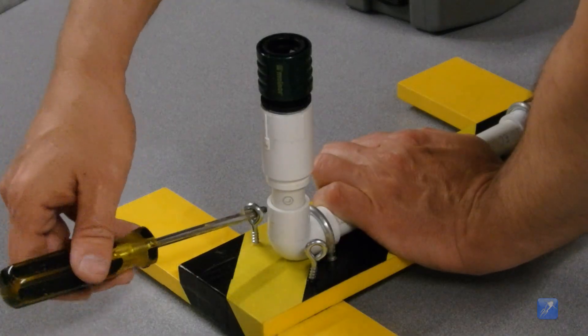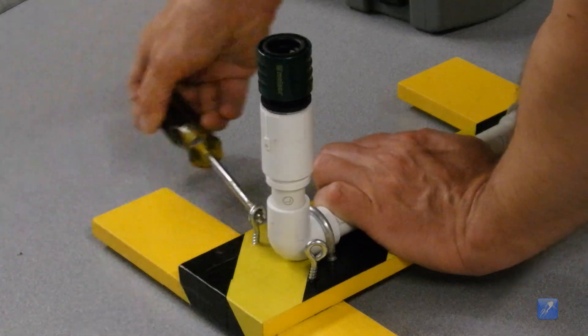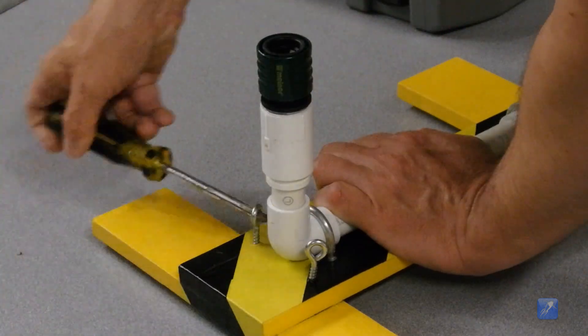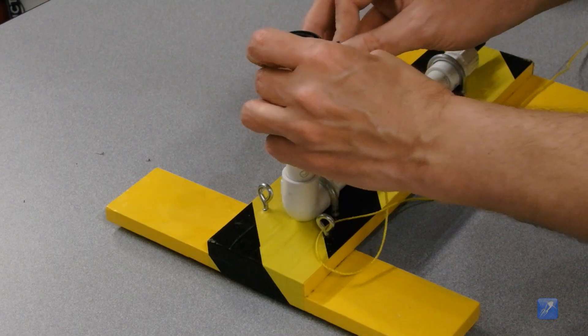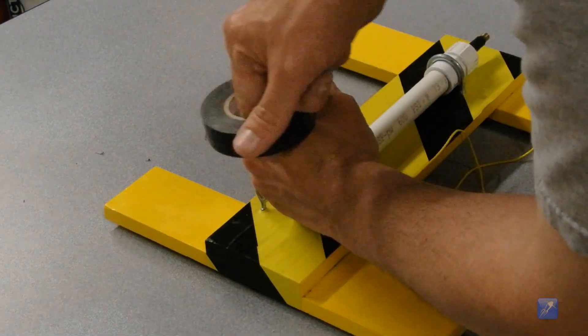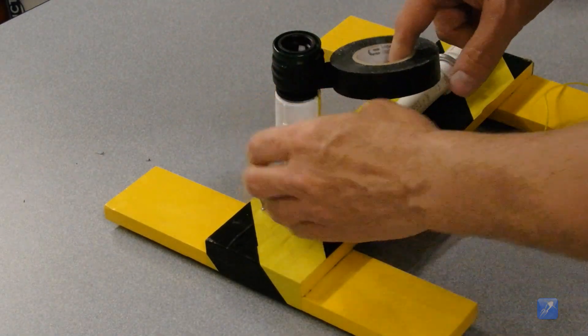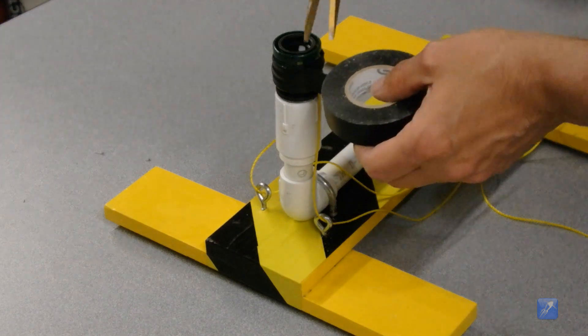Now you place a screw eye on either side of the Gardner release mechanism to contain and direct the release string. Use electrical tape to secure a length of string to either side of the release mechanism and through each screw eye. Now when you pull the release, the rocket can launch.